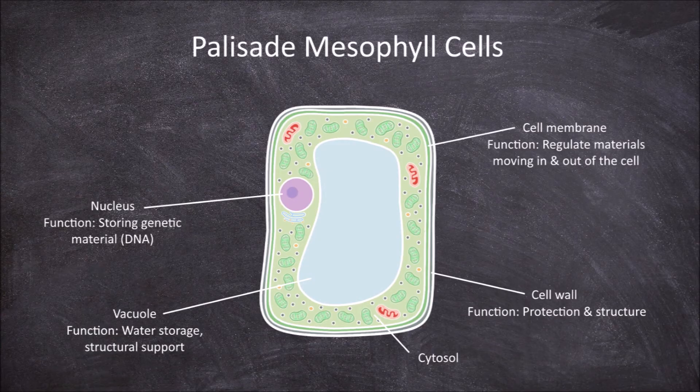The next organelle is the mitochondria. The mitochondria are double-membraned organelles. The function of mitochondria is in the production of energy in the form of ATP.